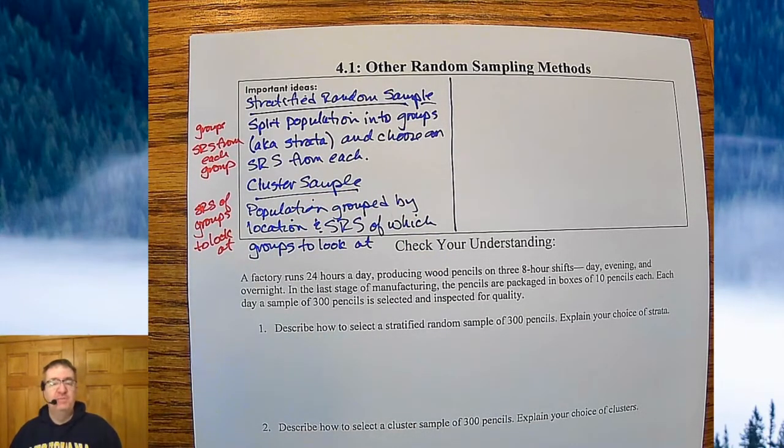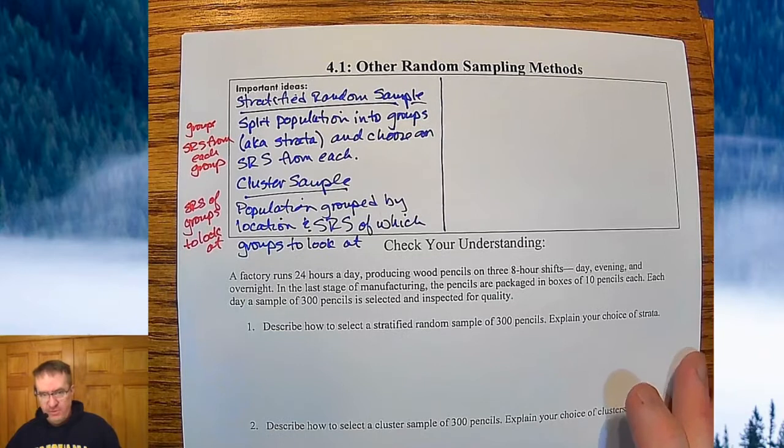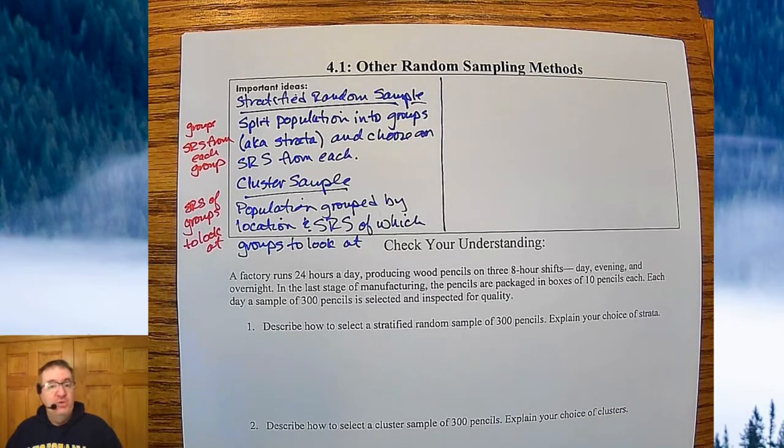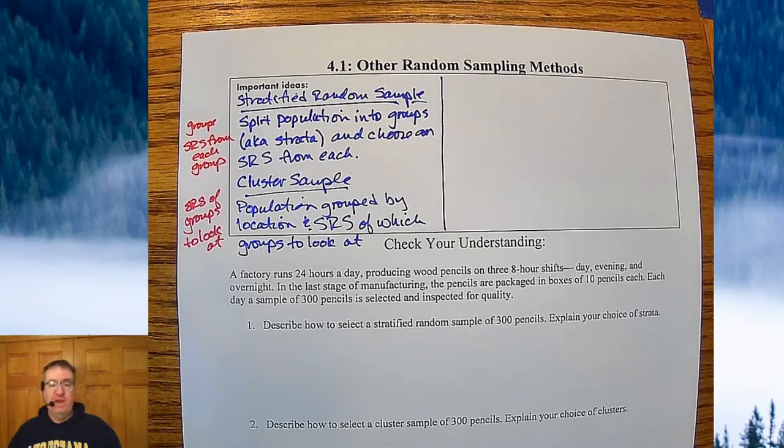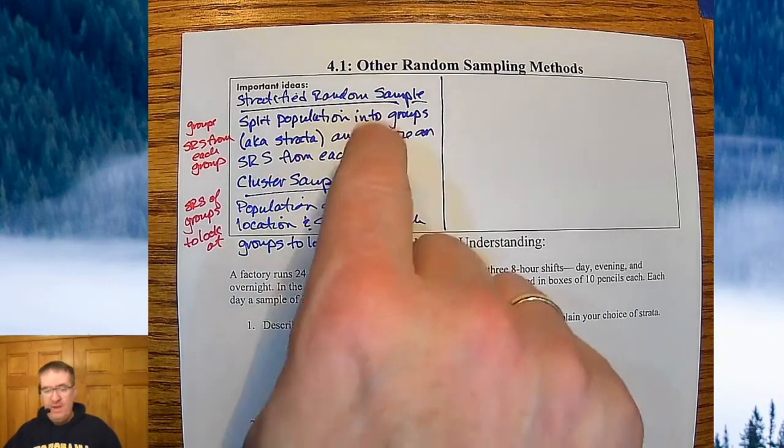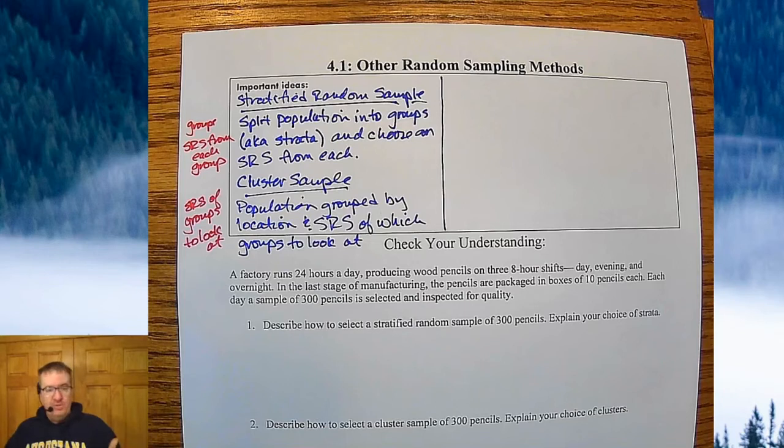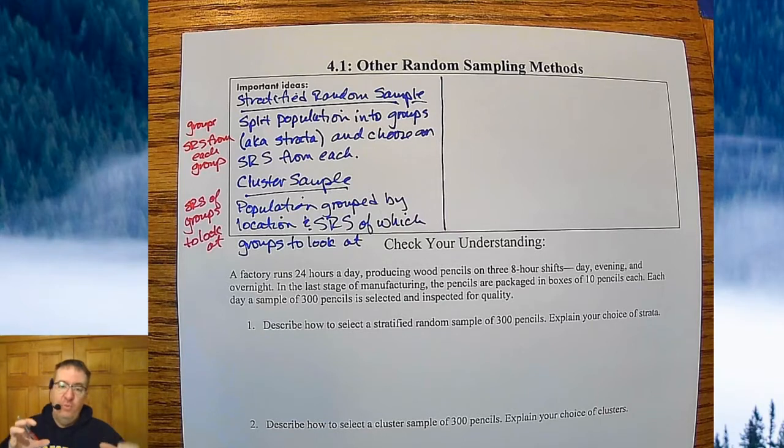So a very popular one that happens is oftentimes, you always hear about test scores in the United States and the test scores in Finland and wherever. A lot of times what they do for things like that is they pick random schools and then go to those schools to pick either the entire senior class, all of their SAT scores, things like that. So they will oftentimes just randomly pick high schools from around the United States. And those are the high schools that get tested or get their data looked at.